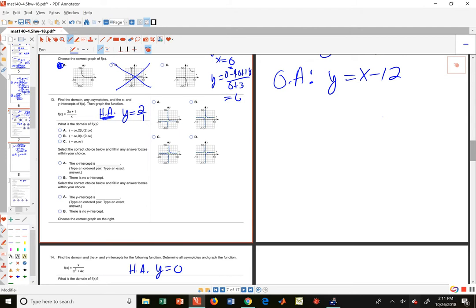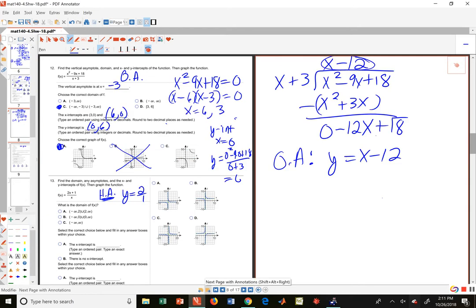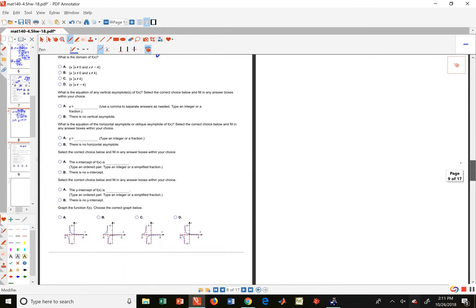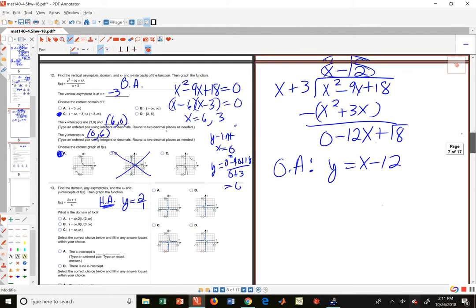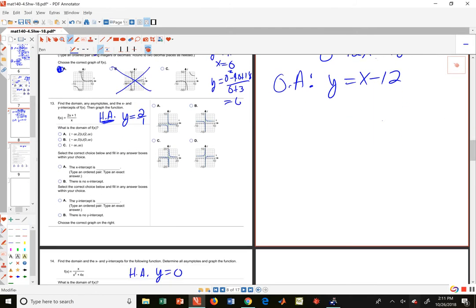If the degree in the top is smaller than the degree in the bottom, it's y equals 0. But if they're equal, if the two degrees are equal, then it's the ratio of those two coefficients. So that's why it was y equals 2 divided by 1. Oops, sorry, I got off the page there.